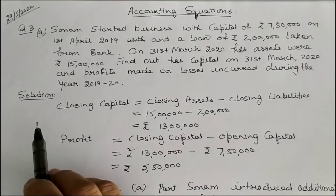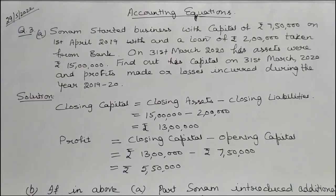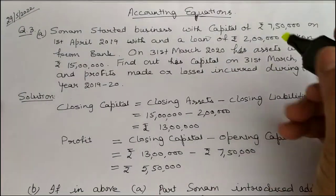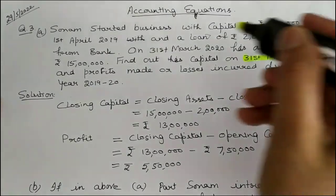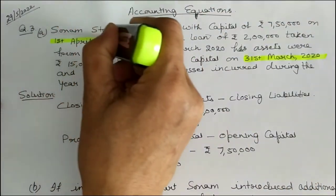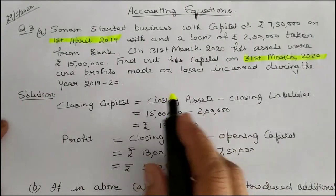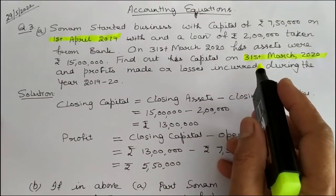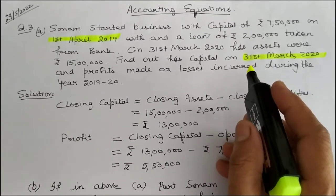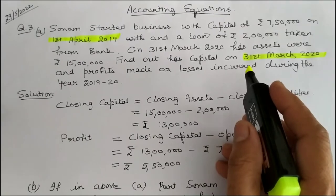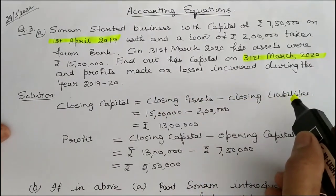So, what do we need to find out? We have to find out her capital as on 31st March 2020. Capital is given on 1st April 2019, so it means you have to find out the closing capital. The formula for capital in accounting is: capital is equal to assets minus liabilities.